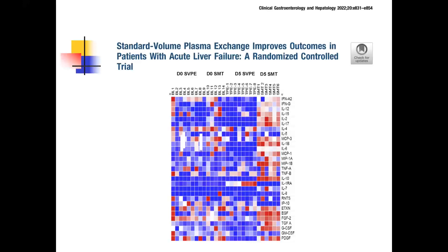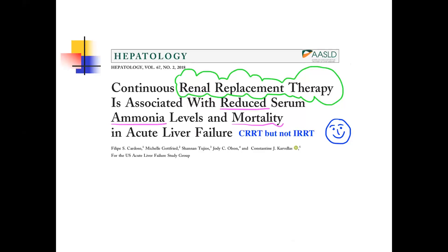Do we have any other machine? Yes — continuous renal replacement therapy, specifically CVVH (continuous veno-venous hemofiltration), is associated with reduced serum ammonia and reduced mortality. Unfortunately, this was not seen with intermittent dialysis. Regular hemodialysis likely creates more hemodynamic instability affecting brain outcome. If you have no CVVH and need to dialyze, consider giving enough pressors and albumin to avoid significant hemodynamic changes.